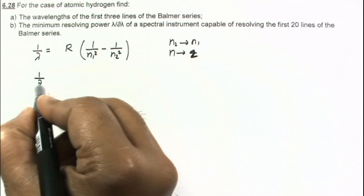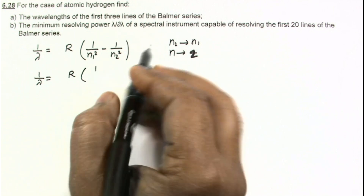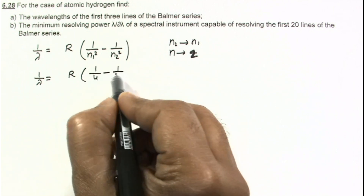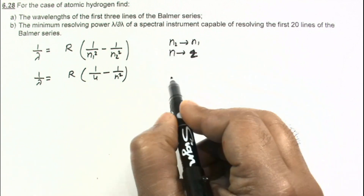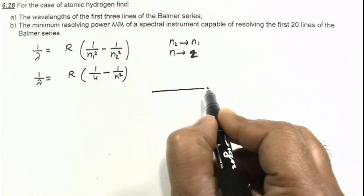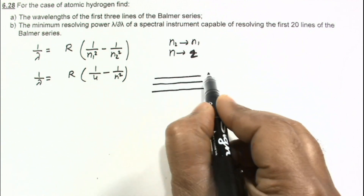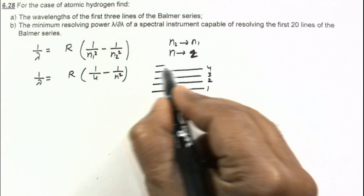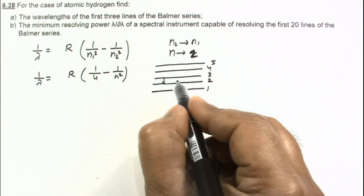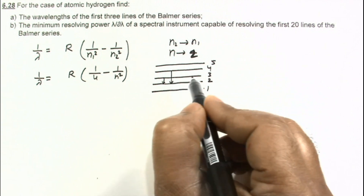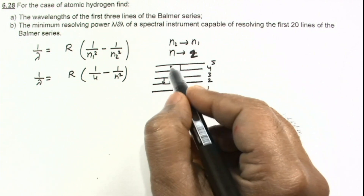For the first three lines of the Balmer series, considering energy levels n = 1, 2, 3, 4, 5: the first line corresponds to transition from 3 to 2, the second line from 4 to 2, and the third line from 5 to 2. So these are the three wavelengths we need to find.